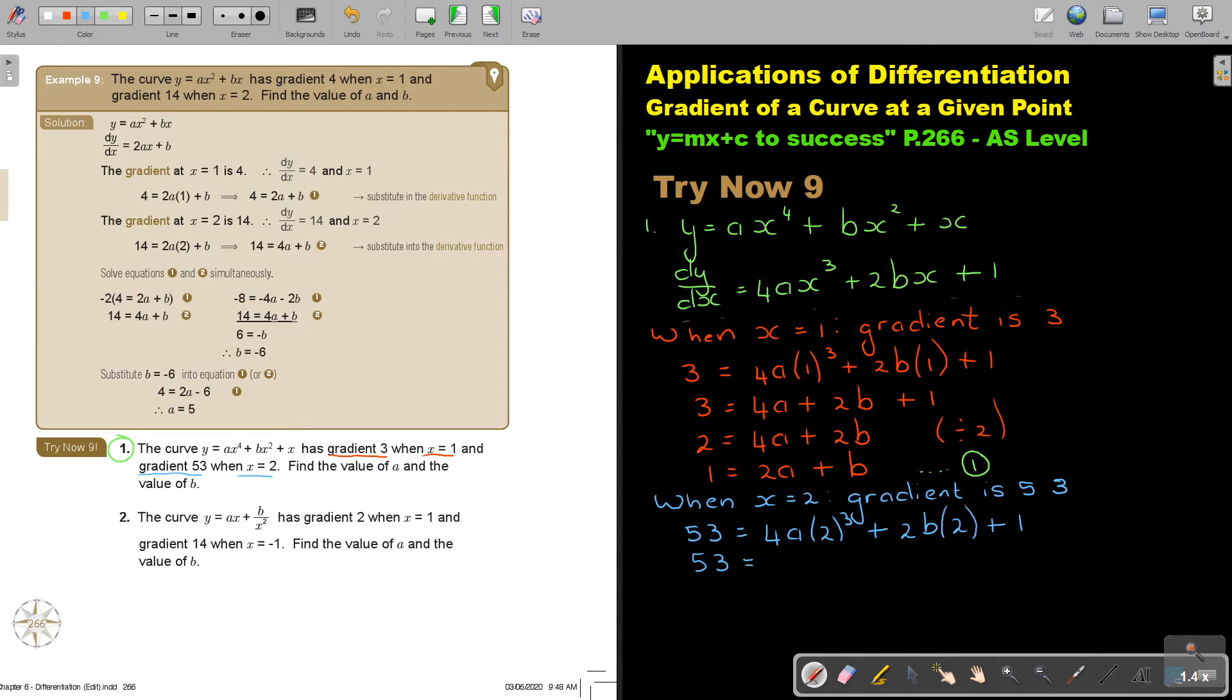So 53, and this is 8 times 4, so that will be 32A plus 4B plus 1. And if I bring it over, it's going to be 52 if I subtract it on this side. 52 equals 32A plus 4B. I can again divide, and in this case, I can divide the whole equation by 4, or by 2, and again by 2. But my final will be 13 equals 8A plus B. And let's call this, this will be my equation 2.